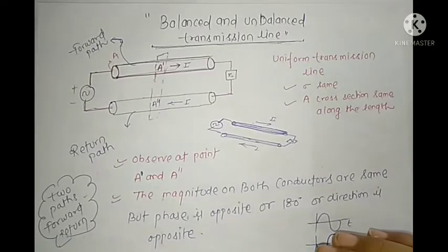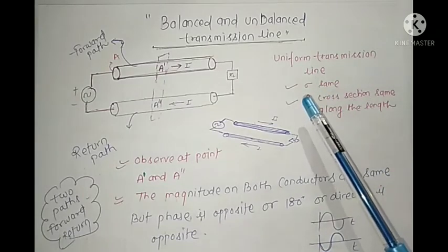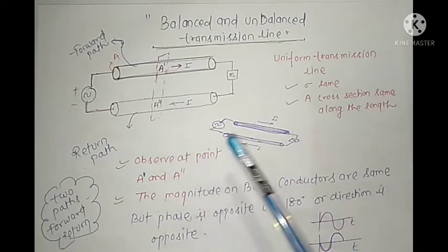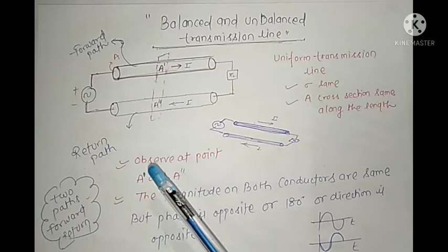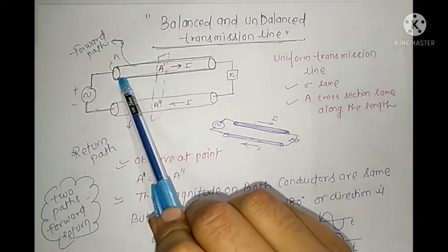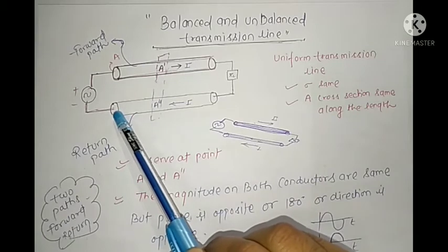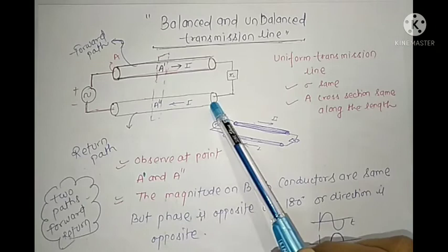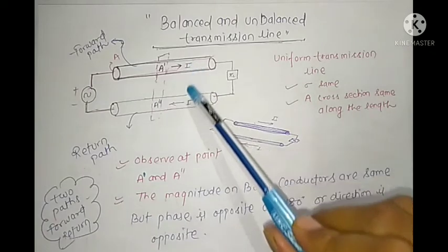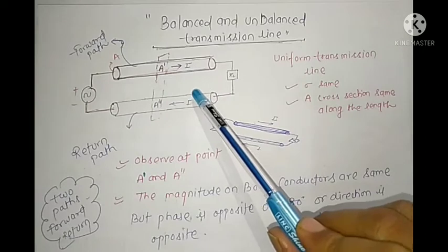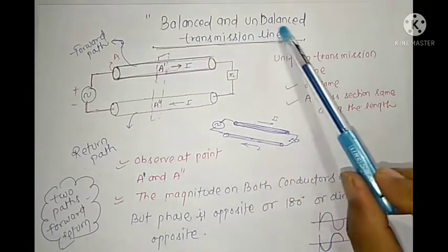In the last class we studied uniform transmission lines. By looking at the geometry we can decide if a transmission line is uniform or not. The definition was: if the cross-sectional area of both conductors is the same along their length, and both conductors are made of the same material, then we call it a uniform transmission line. Today we will study balanced and unbalanced transmission lines.